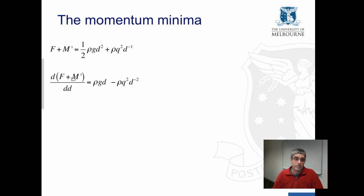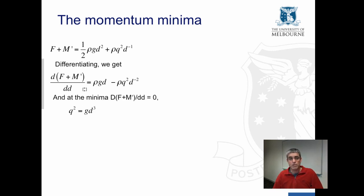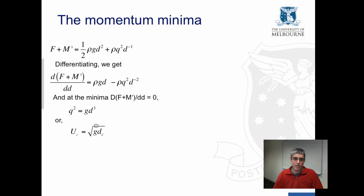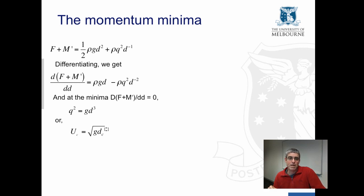We can look for that minima by differentiating. We differentiate the sum of hydrostatic force plus momentum by depth and get this equation. For that to equal zero, the discharge squared has to equal g times depth cubed. We can rearrange that to get the flow velocity at that minima equals the square root of gravity times depth — which is absolutely identical to the velocity-depth relationship for the minima of the specific energy. That's the condition where flow velocity equals wave velocity, so we are again at critical depth and critical flow conditions at this momentum minima.